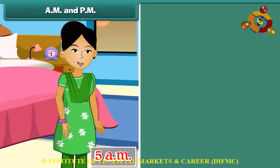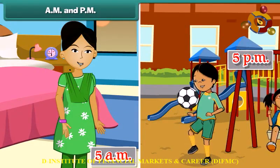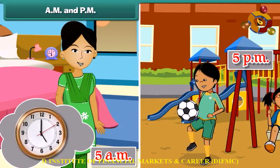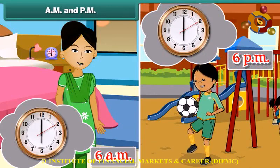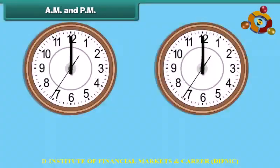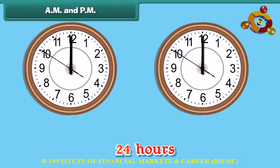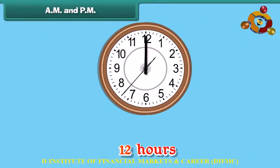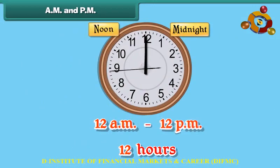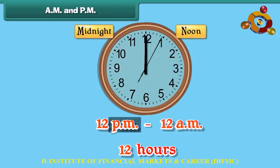Your mother wakes up at 5 o'clock in the morning. You go out to play at 5 o'clock in the evening. It means the clock strikes 5 twice in a day — once in the morning and once in the evening. This is true of every hour from 1 to 12, because there are 24 hours in a day. The 24 hours are divided into two periods of 12 hours each. The first period, from 12 midnight to 12 noon, uses AM. The second period, from 12 noon to 12 midnight, uses PM.